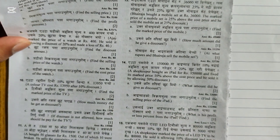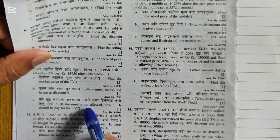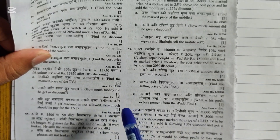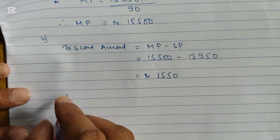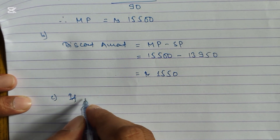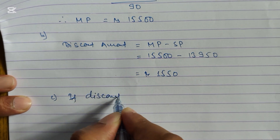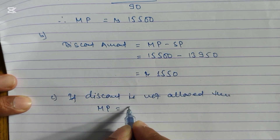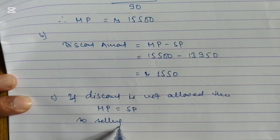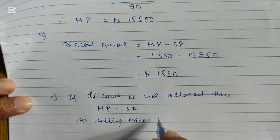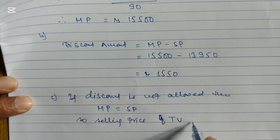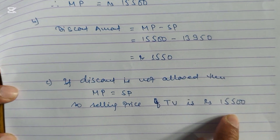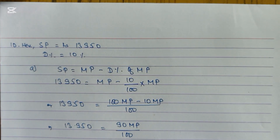Question number C: If discount is not allowed, how much should he pay for the TV? If discount is not allowed, then MP and SP are both the same — mark price and selling price become equal. So if discount is not allowed, selling price of TV is rupees 15,500, same as the MP.